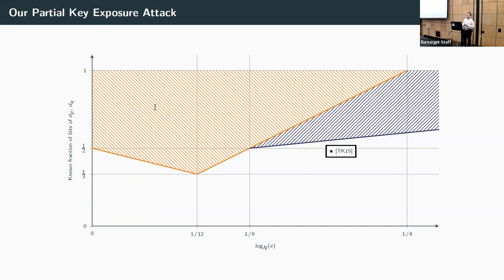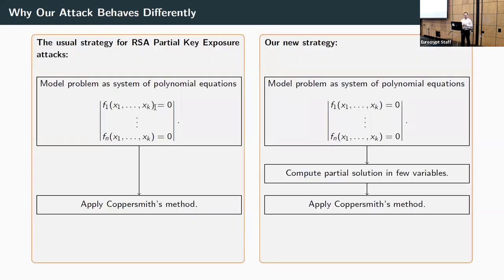Why does our attack behave so differently? Usually these attacks model RSA as a system of polynomial equations and apply Coppersmith's lattice-based method to extract solutions. We did almost the same but with a minor twist: we added an intermediate step, first computing a partial solution in a few variables, which yields a simpler system with fewer variables. This simpler system is easier to solve, and Coppersmith's method works better on it.